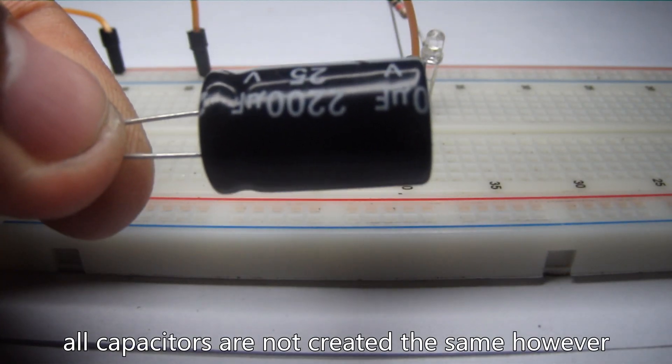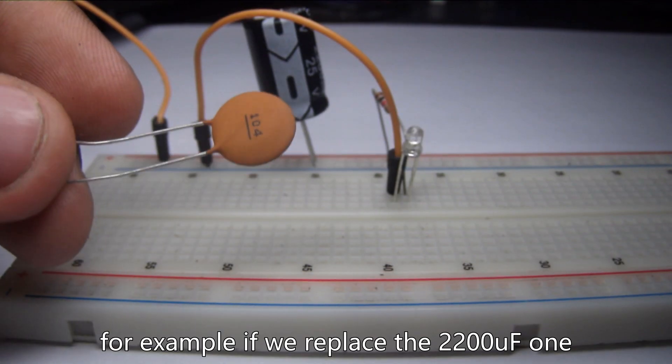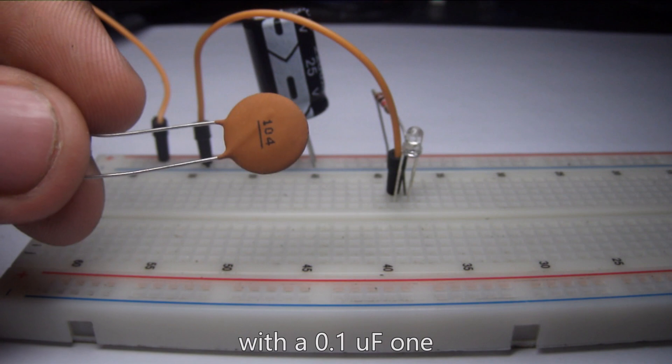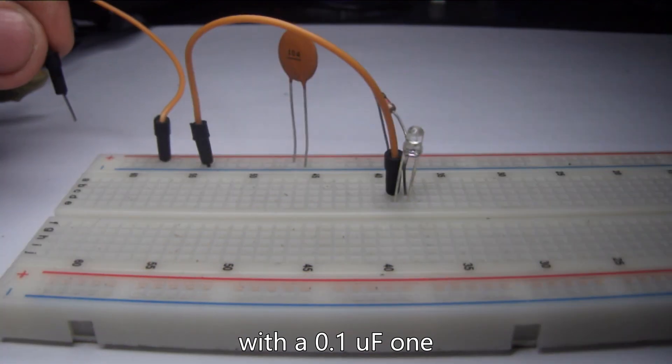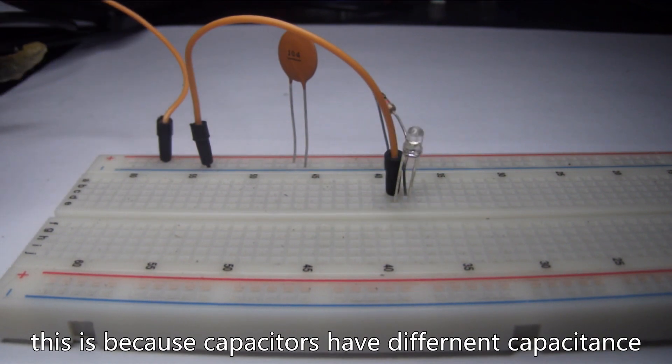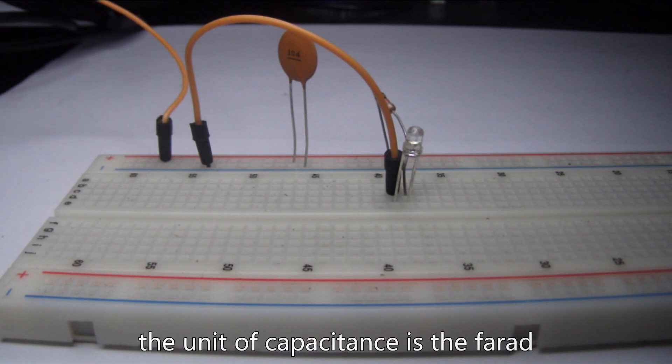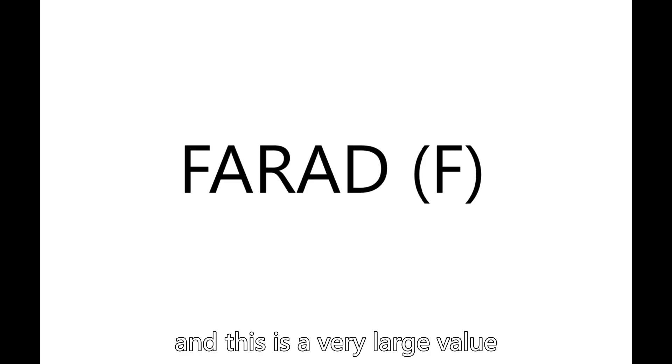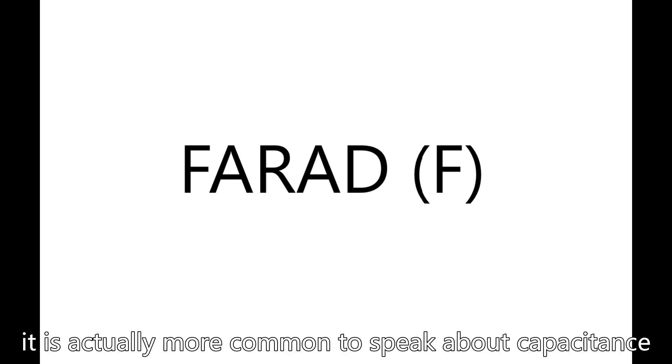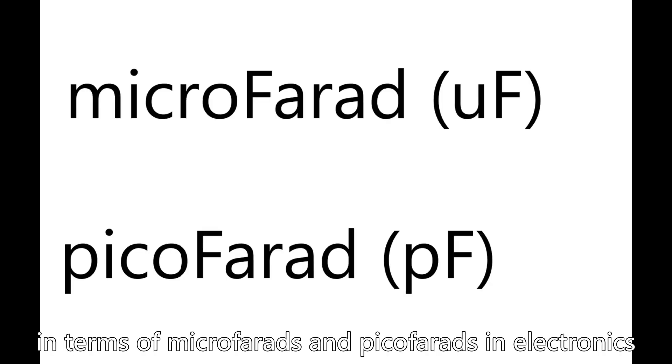All capacitors are not created the same however. For example, if we replace the 2200 microfarad one with a 0.1 nanofarad one, we see that the LED goes dim almost instantly. This is because capacitors have different capacitance values which indicate how much charge a capacitor can store. The unit of capacitance is the farad and this is a very large value. It is actually more common to speak about capacitance in terms of microfarads and picofarads in electronics.